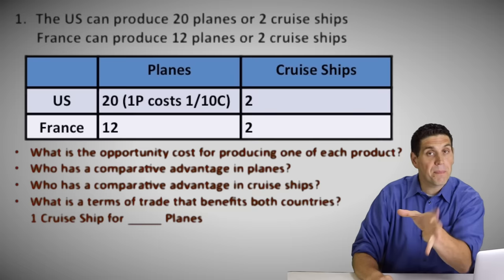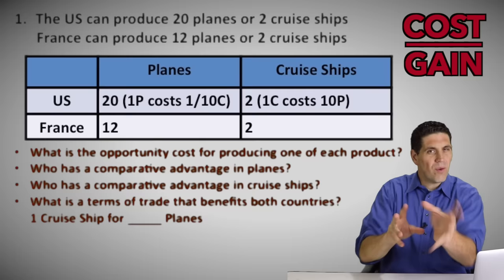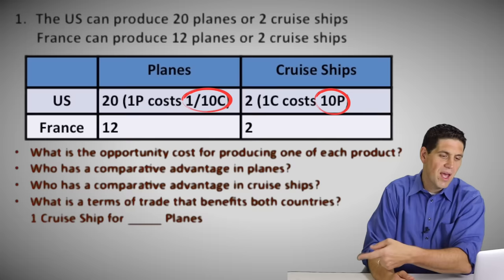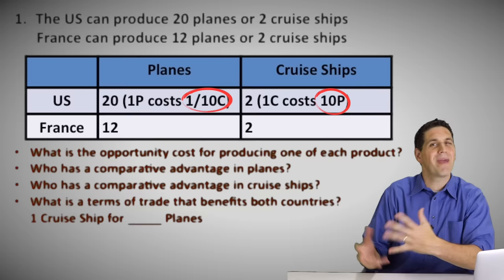On the other side, how much does each one cruise ship cost in terms of planes given up for the United States? Well, each one costs 10 planes. One cruise ship costs 10 planes that could have been produced. Obviously, if you produce two cruise ships and you could have produced 20 planes, each cruise ship is 10 planes you could have made. Also notice these are reciprocals — if one is one-tenth, the other is 10. If you have two-thirds, the other is three-halves. They're always reciprocals of each other. Understand the concept: per unit opportunity cost — how much does each one cost?